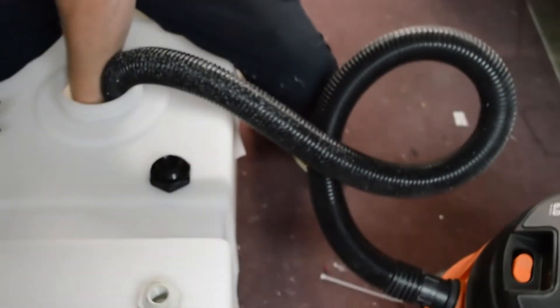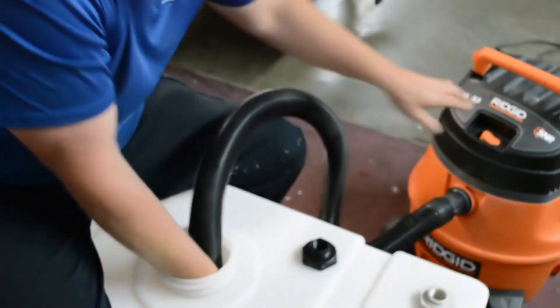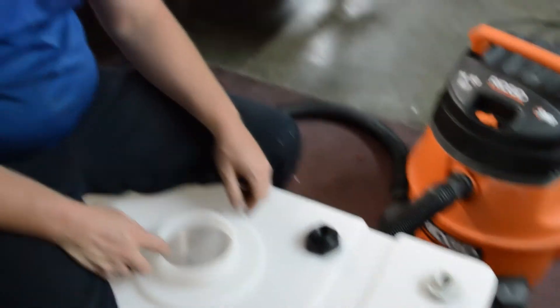Next thing you'll want to do is take a vacuum and clean out the inside of the tank so we get all the shavings out. But that's how we install a bulkhead fitting.